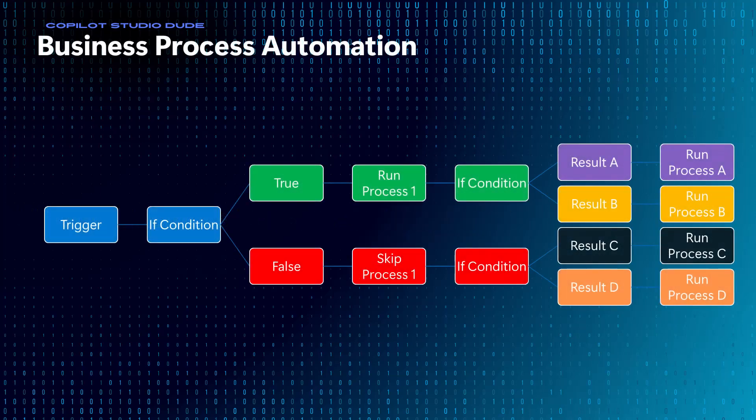With business process automation we start with a traditional use case where we have some sort of event or trigger that triggers an if condition — true or false — that then decides to run a process or skip a process, and beyond that we might have another if statement that says if this result, then do this particular process. Business process automation is very focused on following a pattern established by conditions, if statements, and business logic that you build.